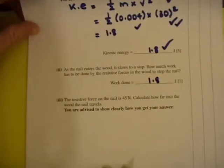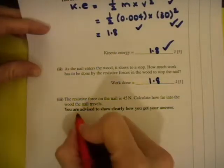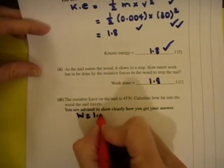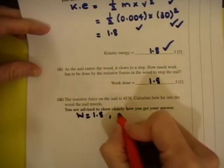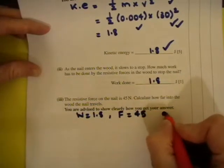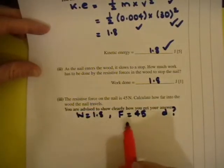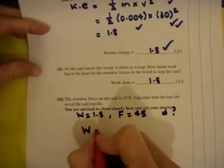The resistive force on the nail, this is part 3, is 45 newtons. Calculate how far into the wood the nail travels. So now we've got how much work is done, we're given the resistive force is 45, and we're asked for a distance. So you should see clearly, if you write those three things down, work equals force times distance must be the equation you're going to use.